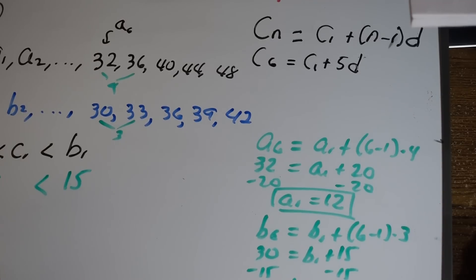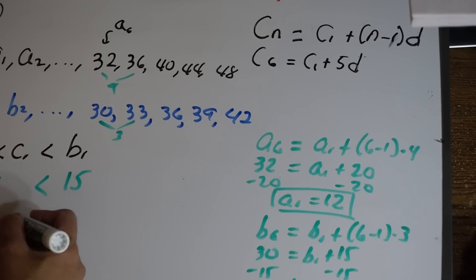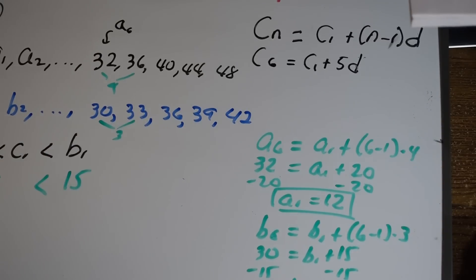So what are the values between 12 and 15? This is 13 or 14. So c_1 can be either 13 or 14.